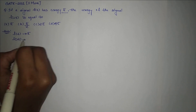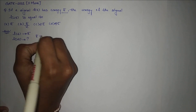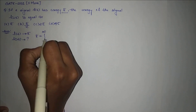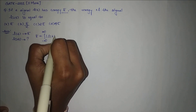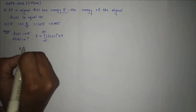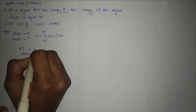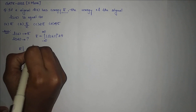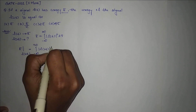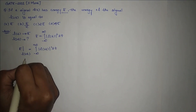Here, f(t) has energy e and we are asked to find the energy of the signal f(2t). We know energy e is equal to integration from minus infinity to plus infinity of mod f(2t) whole square dt. Therefore, the energy of signal f(2t) is equal to integration from minus infinity to plus infinity of mod f(2t) whole square dt. In place of t we have 2t.